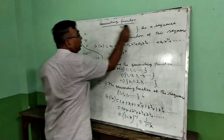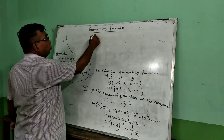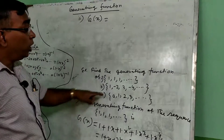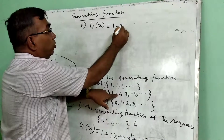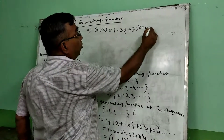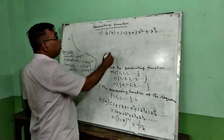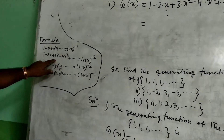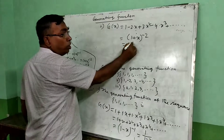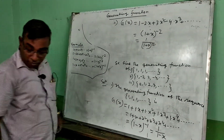Now the second example: find the generating function for the sequence 1, -2, 3, -4, ... The generating function is g(x) equal to 1 + (-2)*x + 3*x² + (-4)*x³ + ... which equals 1 - 2x + 3x² - 4x³ + ... According to the formula, this equals (1+x)^(-2), that is 1/(1+x)².